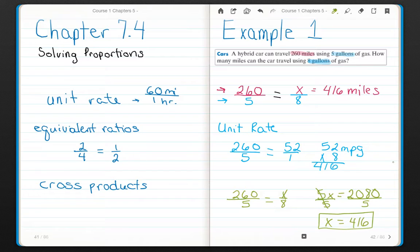And X equals 416. So here I solved this problem using two different ways. The unit rate and using cross products, which I didn't label. Either method works, we get the same answer. So pick the one that works best for you. All right? Let's go into example two.